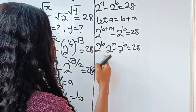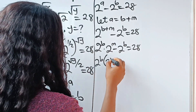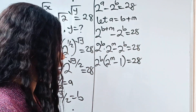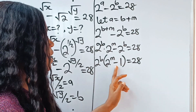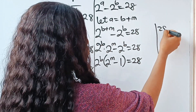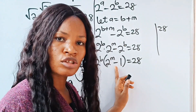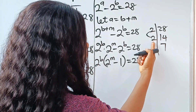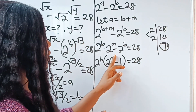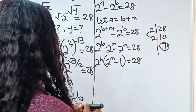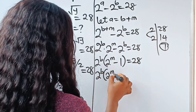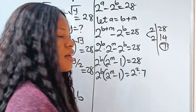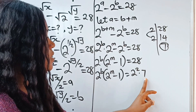Now let's factorize 2 to the power of b. If we do that, this side will give us 2 to the power of m minus 1, so we have 2 to the power of b multiplied by 2 to the power of m minus 1, equal to 28. Now let's factorize 28: 28 divided by 2 is 14, divided by 2 is 7. So we have 2 to the power of 2 multiplied by 7, where 7 is an odd number.